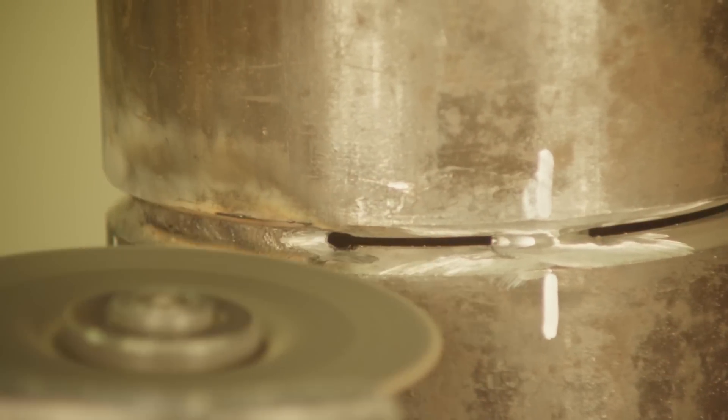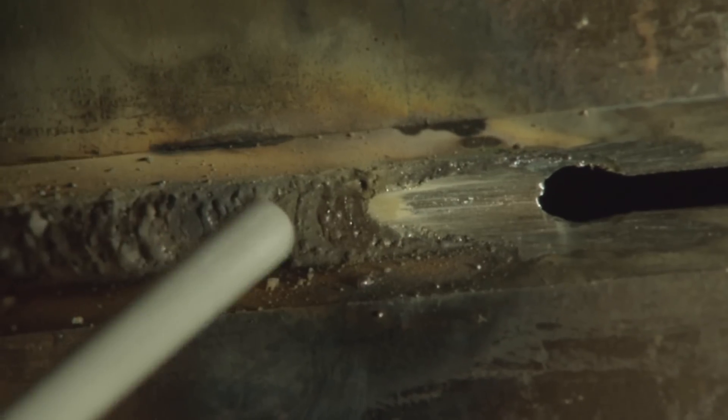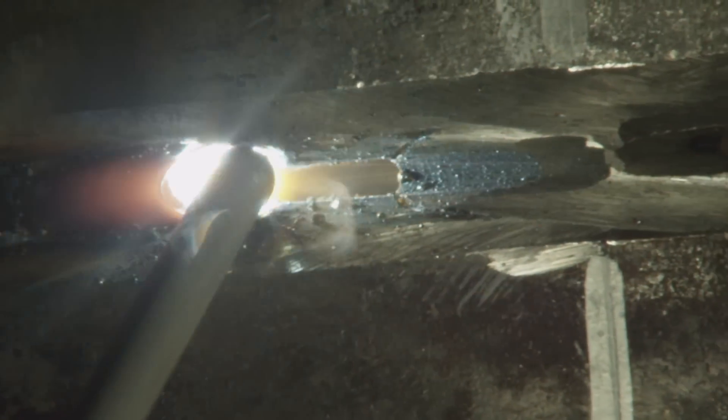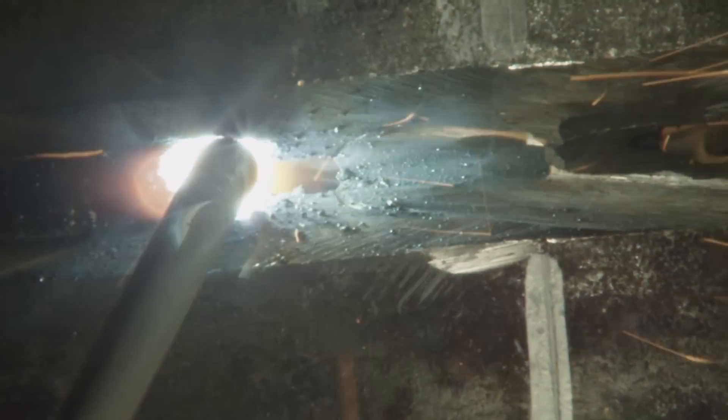Feather out the end of the weld with a grinder, reposition the coupons and proceed. Continue welding towards the next tack, maintaining a short arc until no further penetration is occurring. After a short pause, lengthen the arc to blend in the sides.